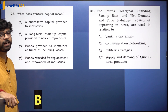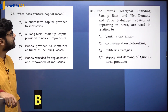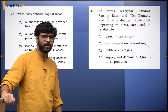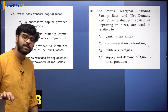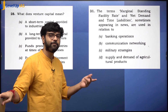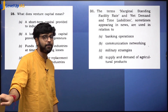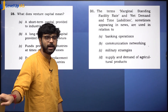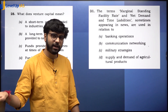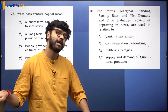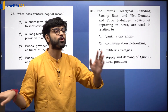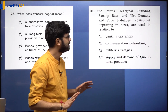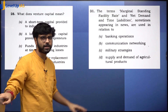Marginal Standing Facility — seen in the context of banking operations. MSF is over and above the last window. What are net demand and time liabilities? Demand deposits include current and savings accounts; time deposits include fixed and recurring deposits. Net means the bank's own deposits with others are subtracted. We have covered all this in class.